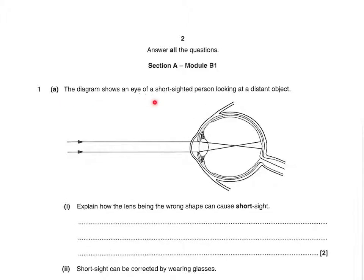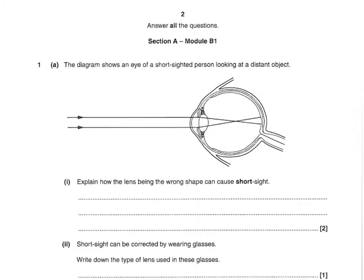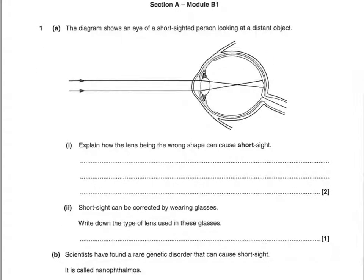First section is biology. The diagram shows an eye of a short-sighted person looking at a distant object. It says, explain how the lens being the wrong shape can cause short sight. There are two marks for this. The first mark is saying that it could be too rounded, or the lens is too powerful or too thick. The second mark is saying that it focuses light before the retina, or we could say it refracts or bends the light too much.